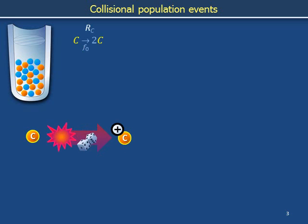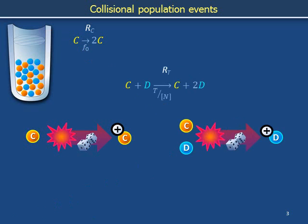The number of such reactions that have proceeded since a reference time is RC. On occasion one copper cell and one denim cell might collide in a fashion that triggers the denim cell to duplicate. This event is notated using a chemical reaction equation indicating that one copper cell and one denim cell become one copper cell and two denim cells with rate coefficient T over bracket N. Bracket N is the number density of cells piled at the bottom of the test tube. Supposing that the cells pack tightly and are incompressible, the density bracket N is a constant throughout the cell population. We are treating T as a constant coefficient, and this means that T over bracket N is also a constant coefficient. The number of these reactions that have occurred since a reference time is RT.